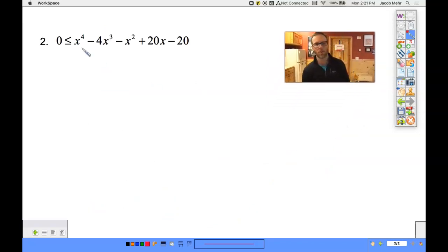All right, let's try a little bit bigger one. Fourth degree polynomial. Now, don't let the way I wrote this inequality goof you up. It says zero is less than or equal to x to the fourth, and so on.